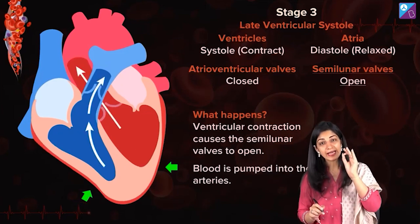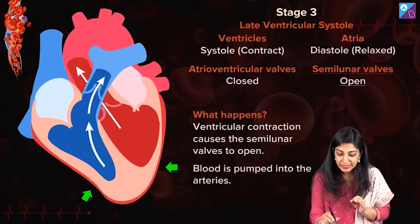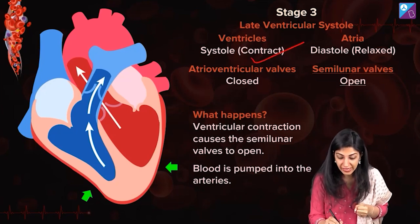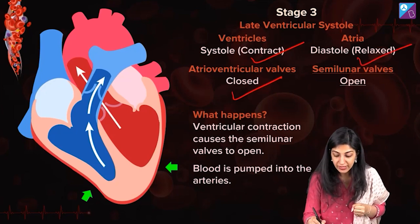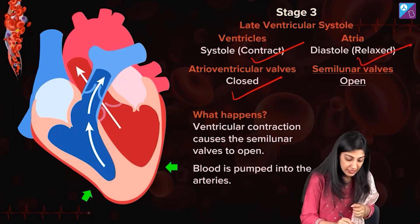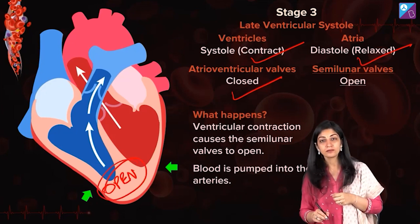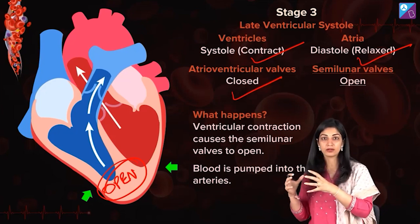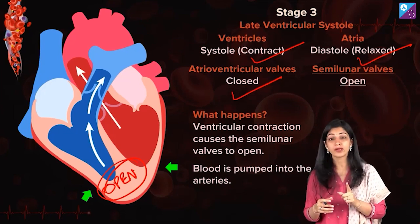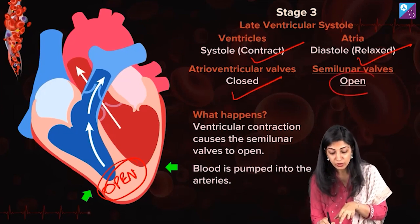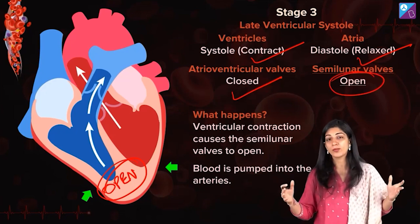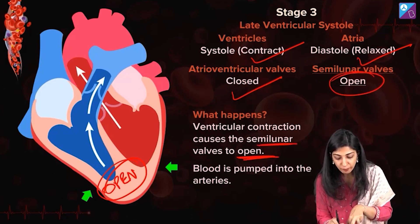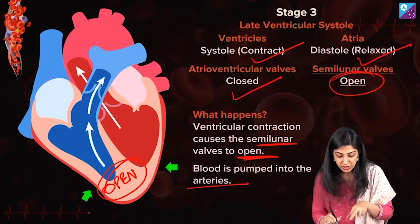Late ventricular systole: the ventricle is still contracting, the pressure is increasing, AV valves are closed, atria are relaxed. Due to this increased contraction, now the semilunar valves will open. So if they ask you in an MCQ, when semilunar valves open — in late VS, semilunar valves open. Ventricular contraction causes semilunar valves to open, and blood is pumped into the arteries.